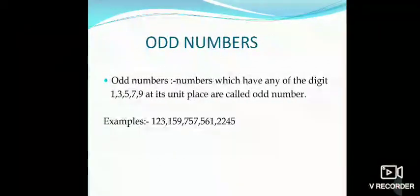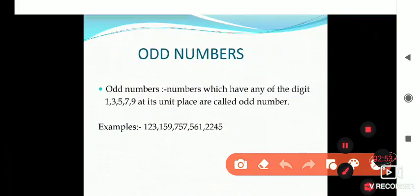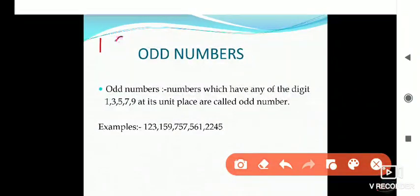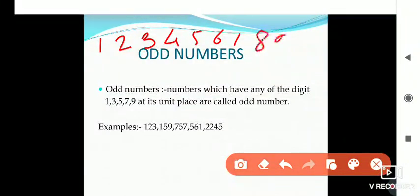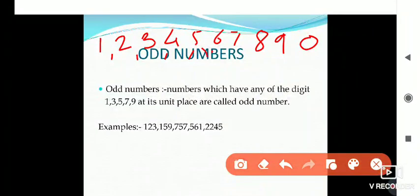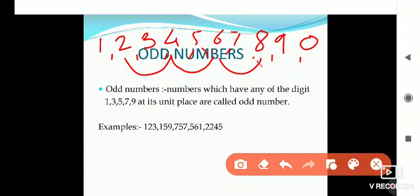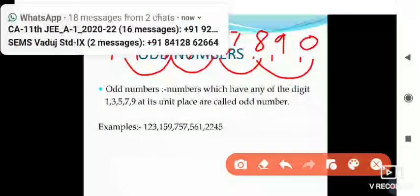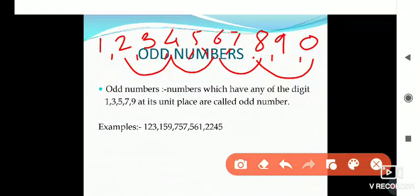Now the next is odd numbers. As we know, the digits are 1, 2, 3, 4, 5, 6, 7, 8, 9 and 0 — these 10 digits are there. From these digits, the numbers 2, 4, 6, 8, and 0 — if these are present at the unit place, then the given number is called an even number.